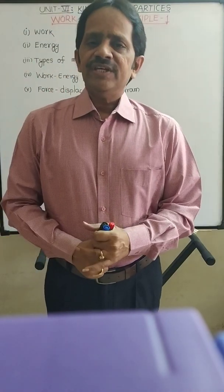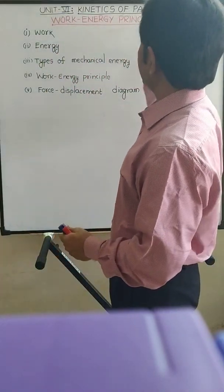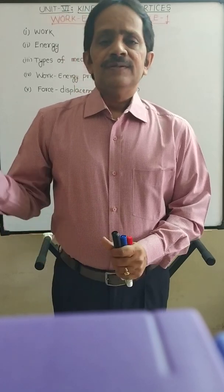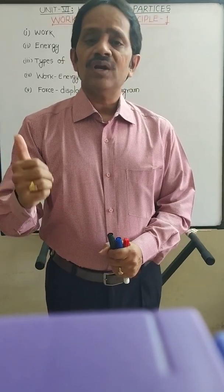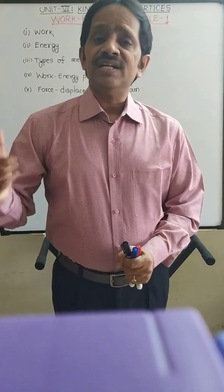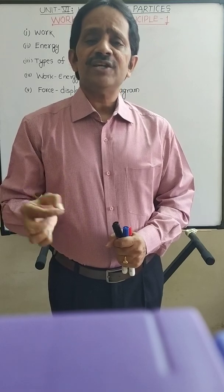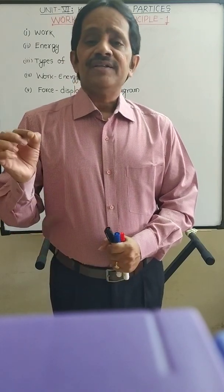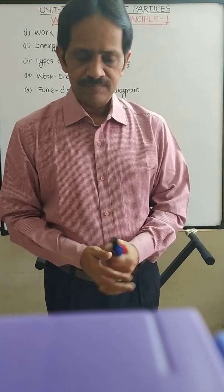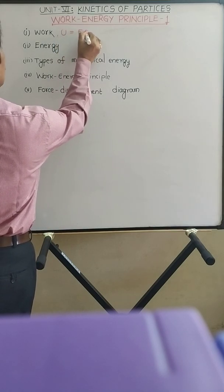Hello students. In this video we are going to study the work-energy principle, which is the second chapter of Unit 6, that is kinetics of particles. Work-energy principle is the application of Newton's second law of motion. Let us first revise some basic concepts. What is work? When is work said to be done? If a force is acting on a body and the body has displacement because of that force, then work is said to be done by the force on the body. This work done is calculated by taking the product of force and displacement in the direction of the force. This work done is represented by the letter U, which is equal to force into displacement.